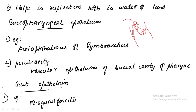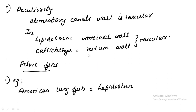Regarding gut epithelium, the wall of the gut becomes modified — meaning it becomes vascular — to assist respiration in the same way. The example for this type of fish is Misgurnus fossilis. The alimentary canal's wall is vascular. Specifically in Lepidosiren, the intestinal wall is highly vascular, and in Callichthys, the rectum wall is vascular.